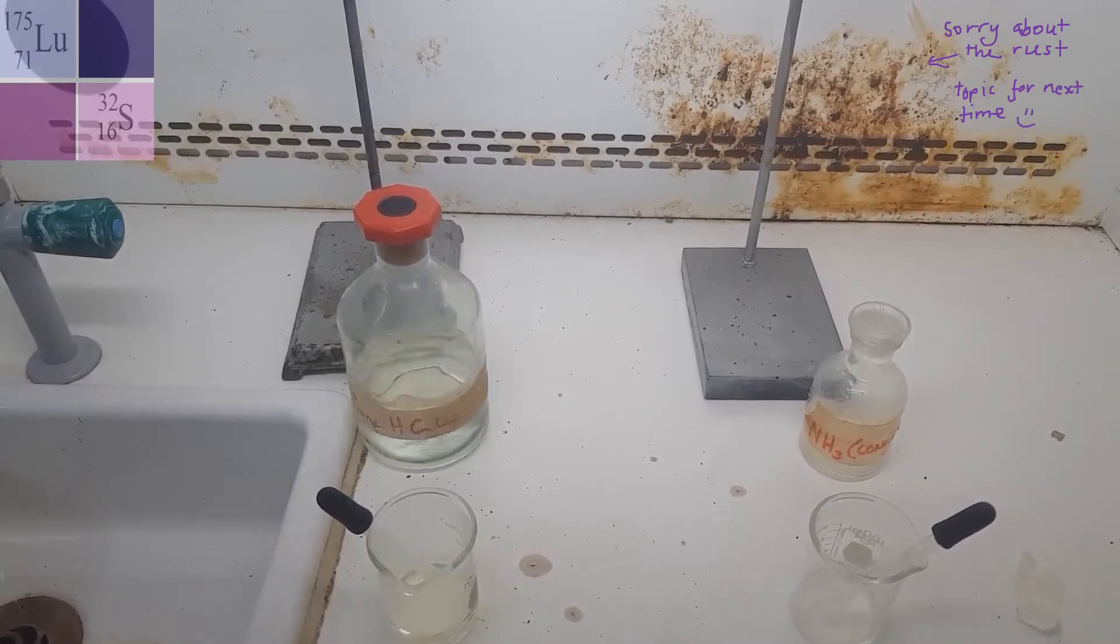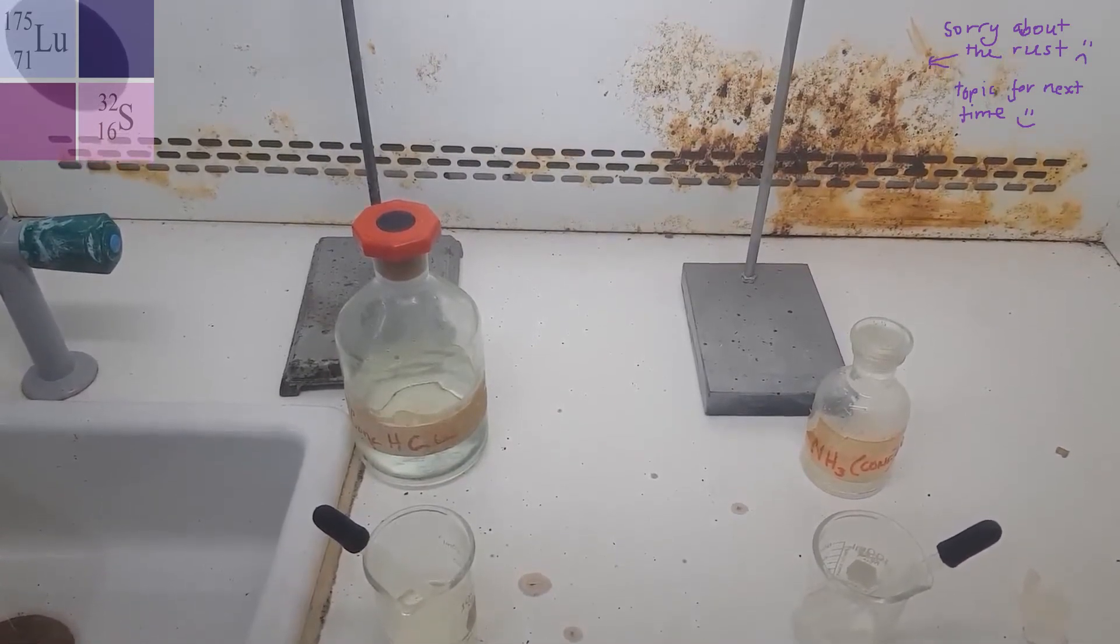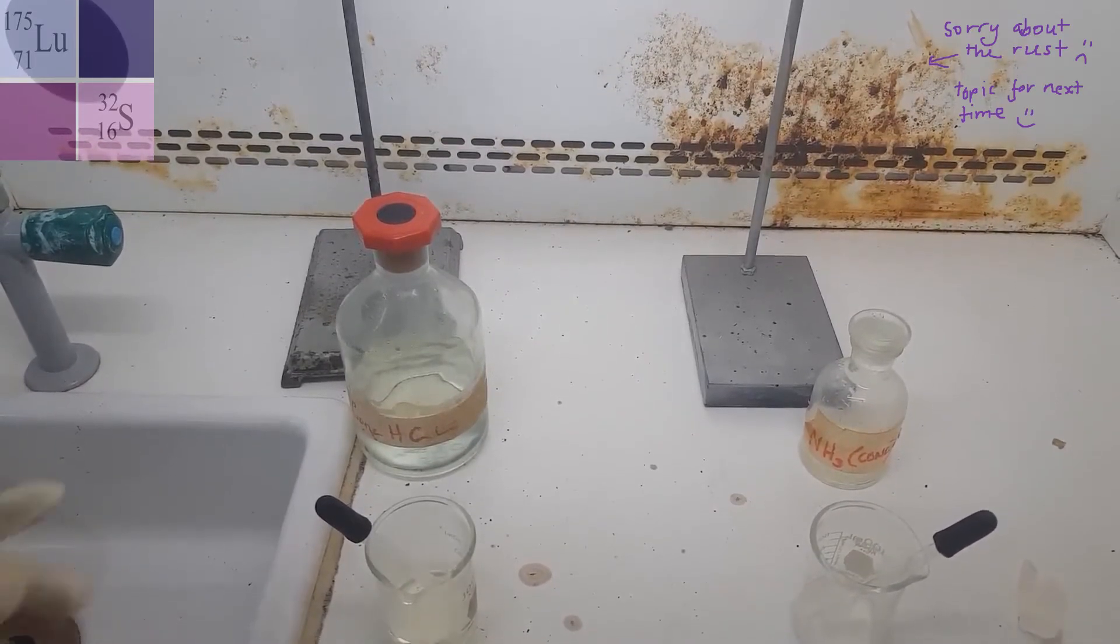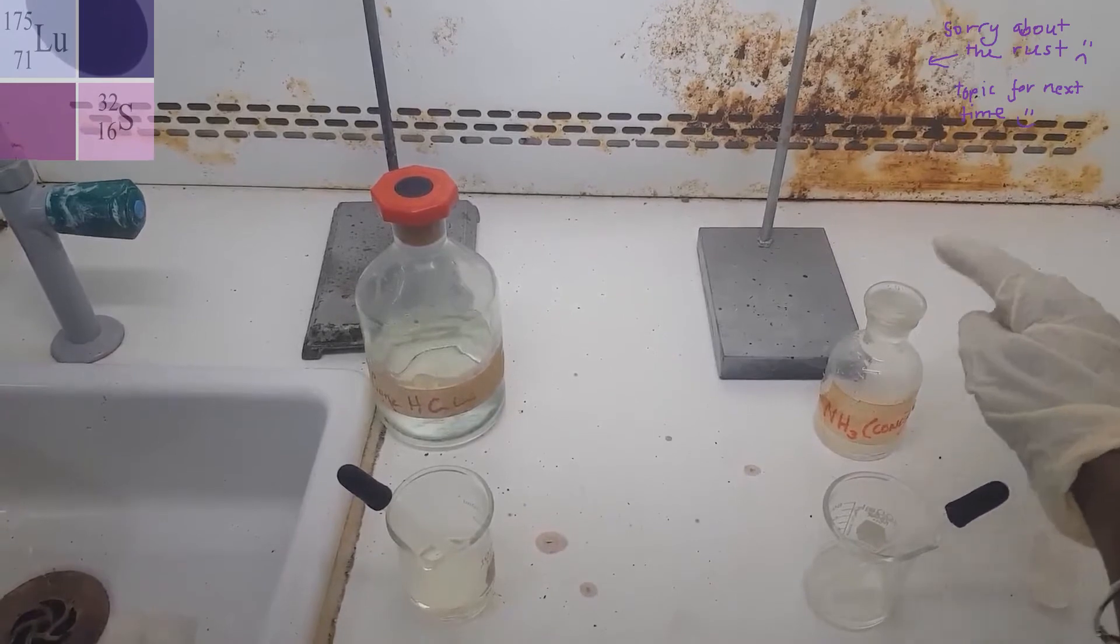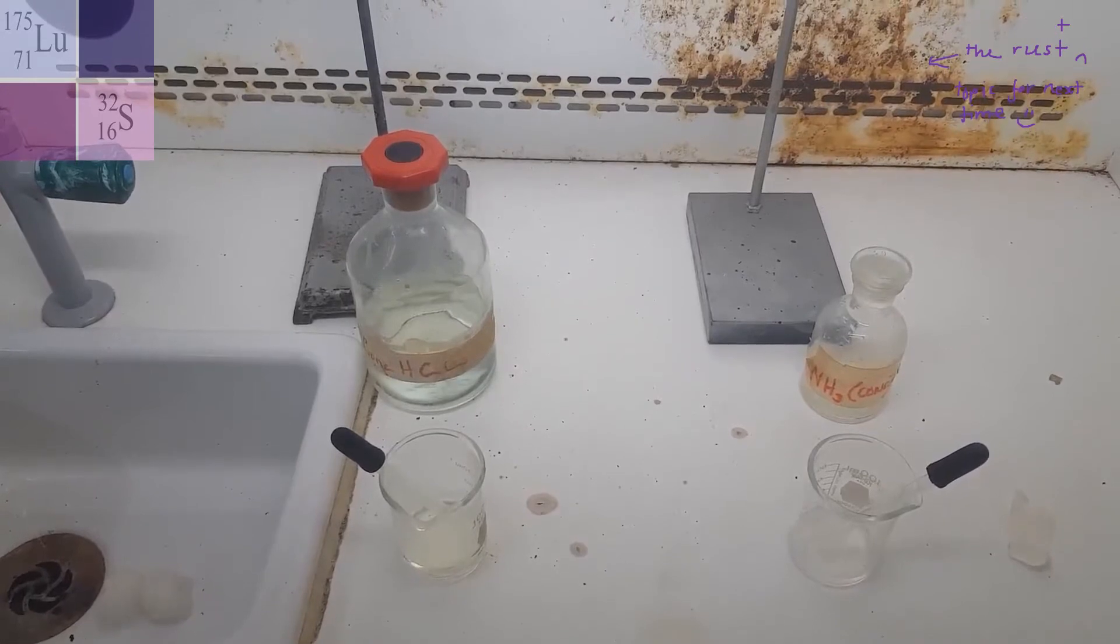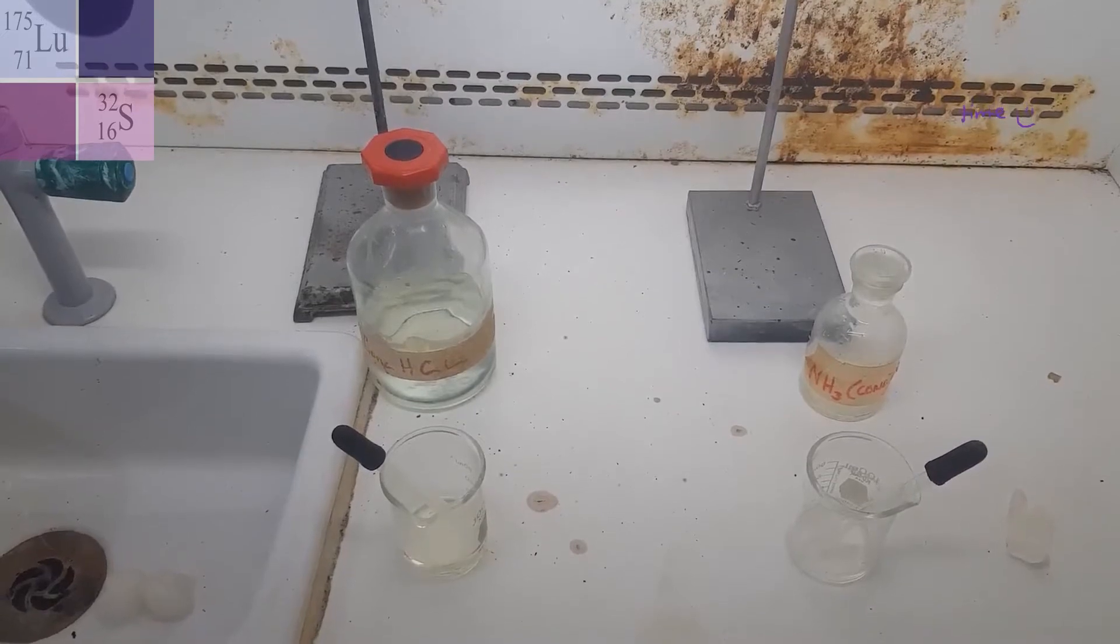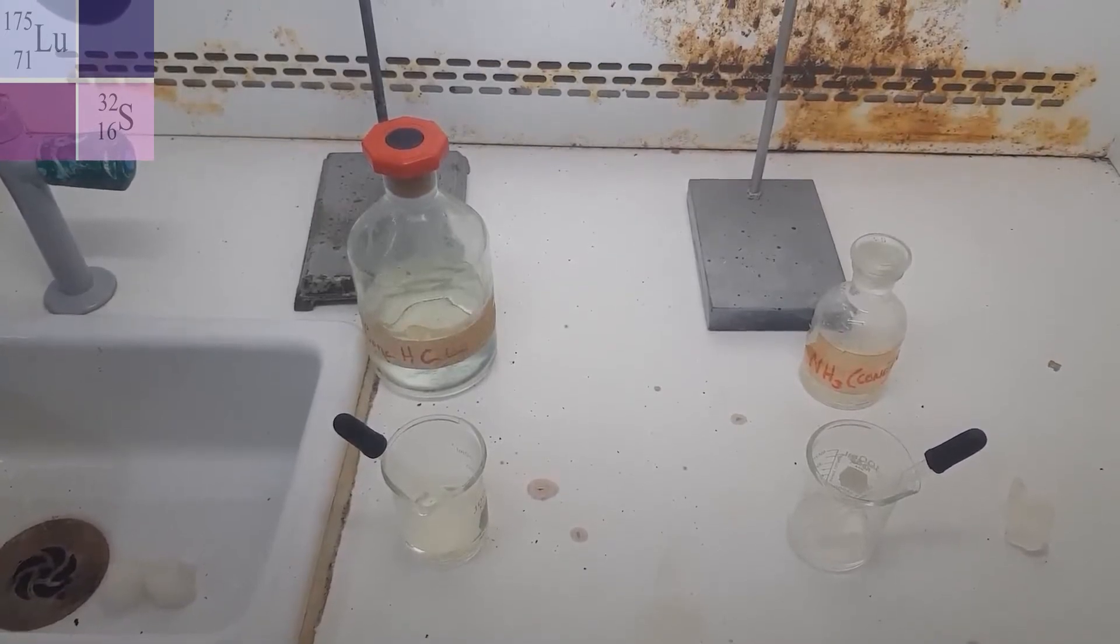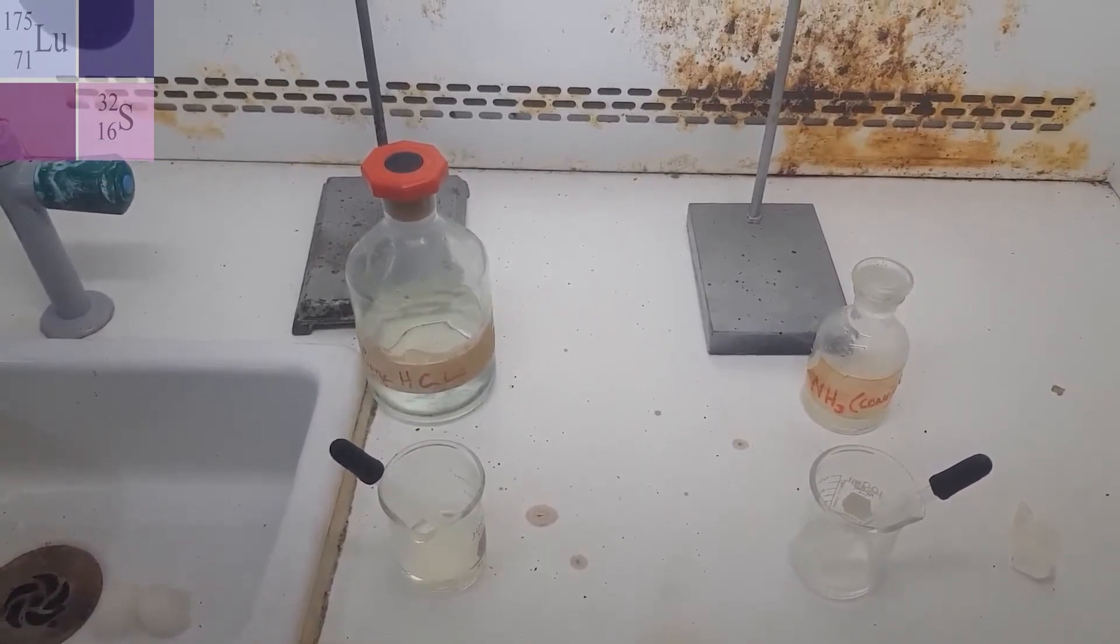So today we're going to investigate the rate of diffusion of gases using two gases, hydrogen chloride gas and ammonia gas. Now in this container here, I have concentrated hydrochloric acid, and in this container, I have concentrated ammonia. So these substances will, as soon as you uncork the bottle, because of their high concentration, they immediately turn into a vapor. So when concentrated hydrochloric acid becomes a vapor, we call it hydrogen chloride gas.